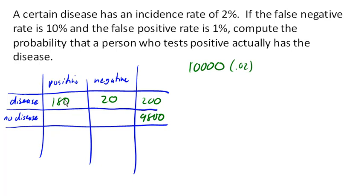Meanwhile, we have a false positive rate of 1%, and that means that out of our people who don't have the disease, 1% of them, or 98 of them, are going to test positive. Meanwhile, the other 9702 of them are going to correctly test negative.